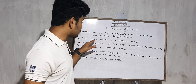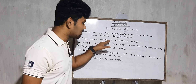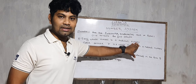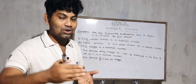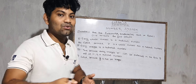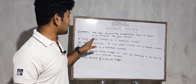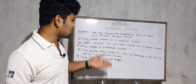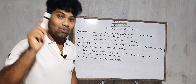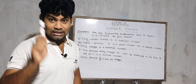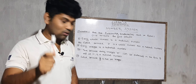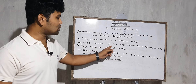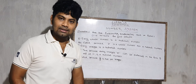Think about it. Whole numbers are: 0, 1, 2, 3... Natural numbers are: 1, 2, 3, 4... The question says every whole number is a natural number, meaning from 0 to infinity it would be natural. But natural numbers start from 1, not 0. So this statement is FALSE, because 0 is a whole number but not a natural number.